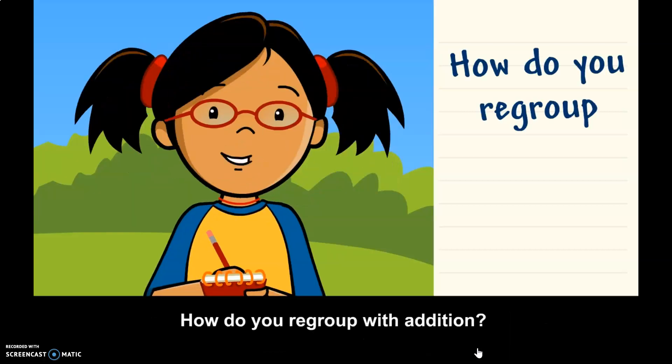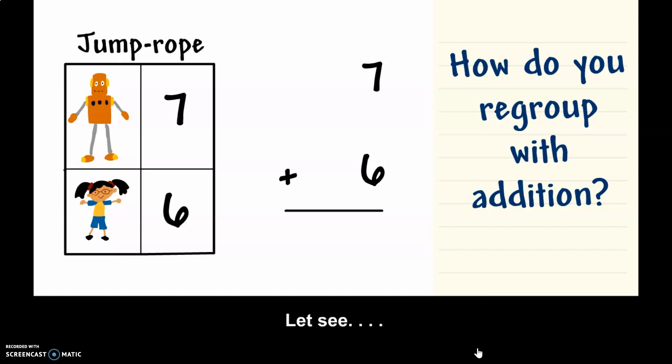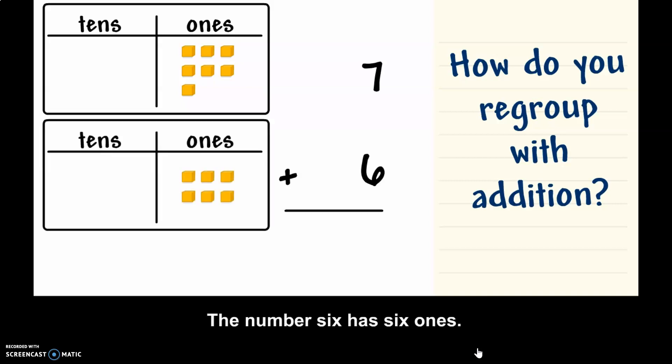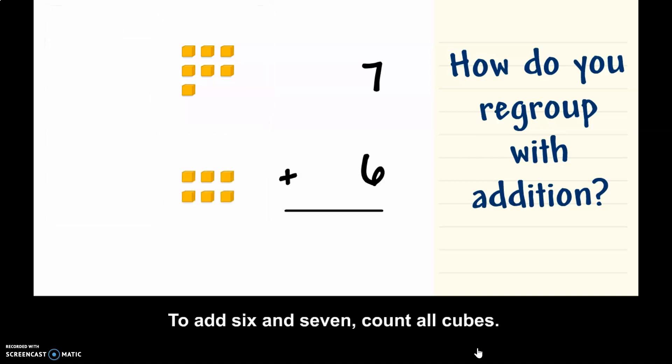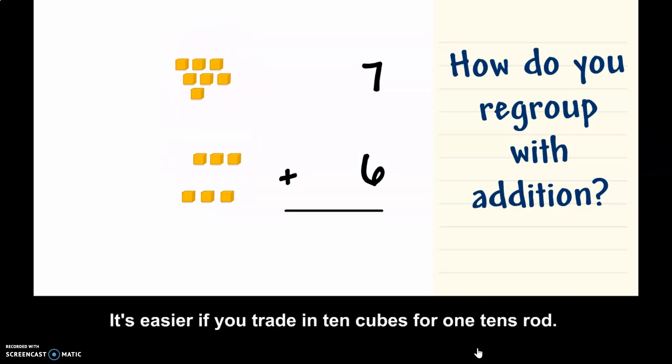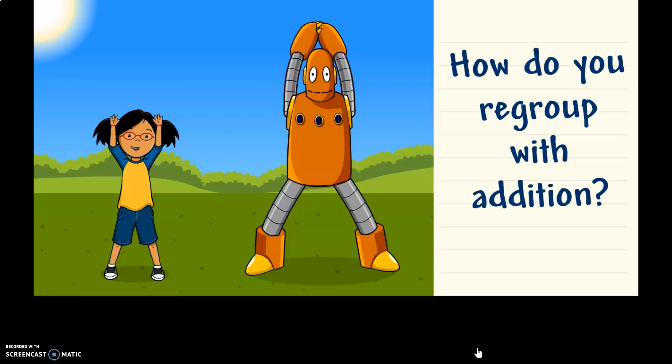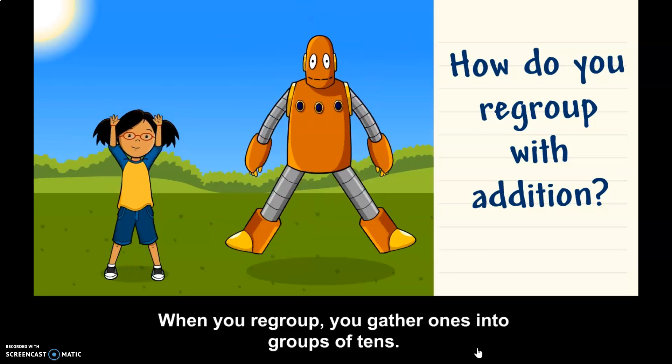How do you regroup with addition? Let's see. We want to add 7 plus 6. The number 7 has 7 ones. The number 6 has 6 ones. To add 6 and 7, count all the cubes. It's easier if you trade in 10 cubes for one tens rod. There's one tens rod and three ones cubes. So, 7 plus 6 is equal to 13. When you regroup, you gather ones into groups of tens.